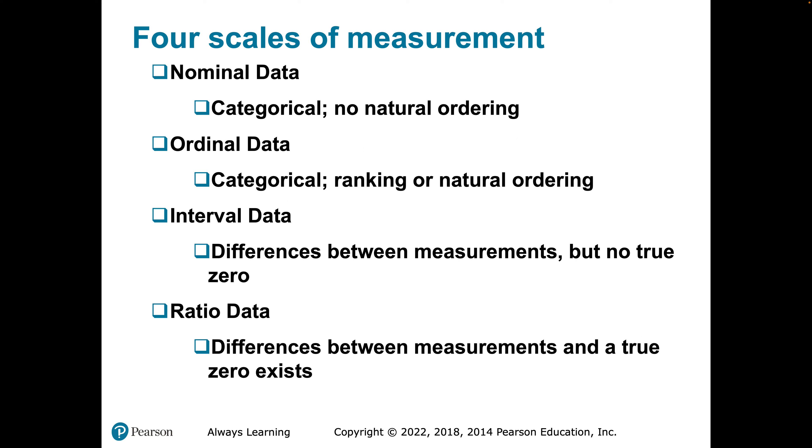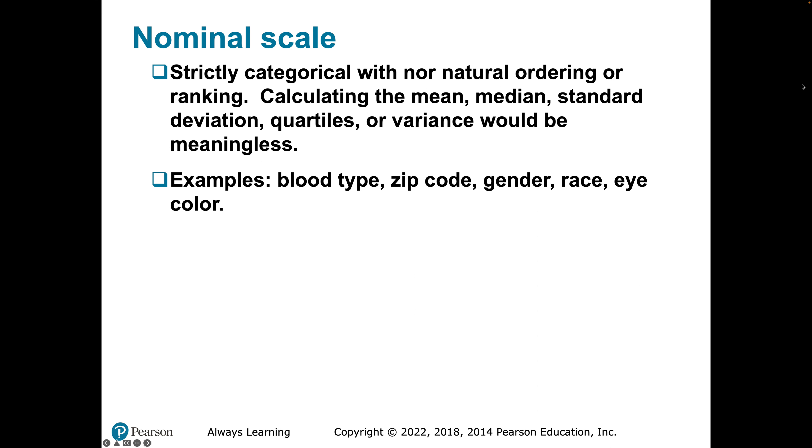Transitioning into quantitative variables, interval and ratio data are both quantitative, and these are a little bit more complicated than nominal and ordinal data. Interval data, which is quantitative, expresses the difference between measurements but has no true zero value. Ratio data also examines differences between measurements, but it has a true zero existence.